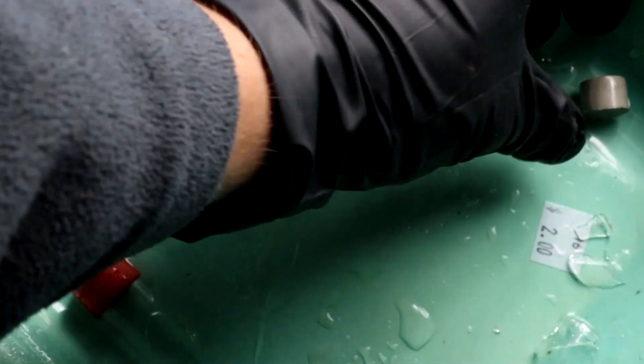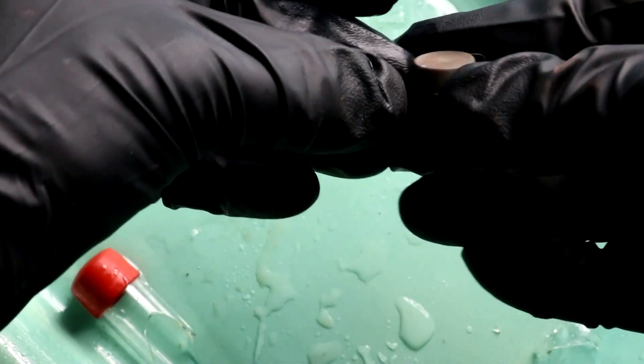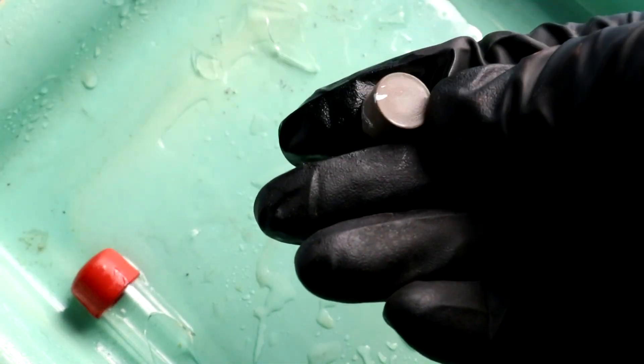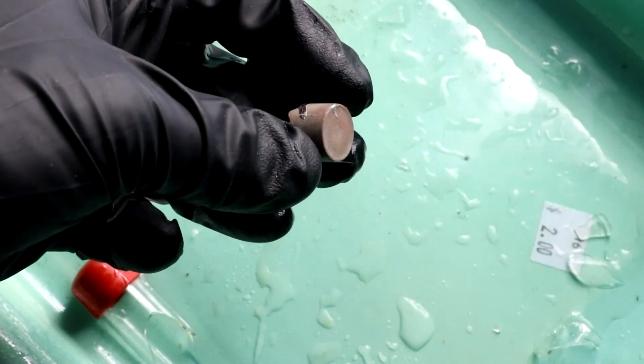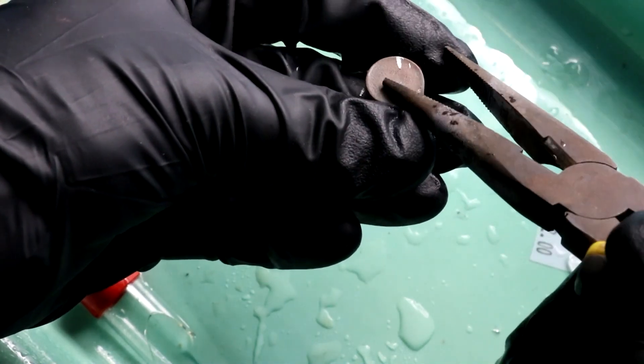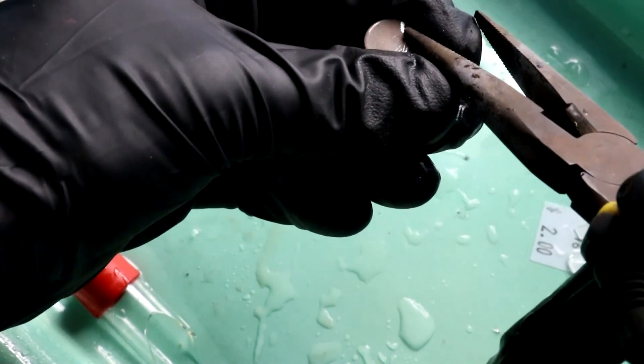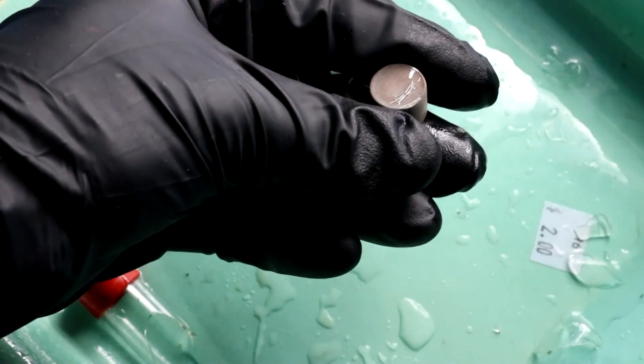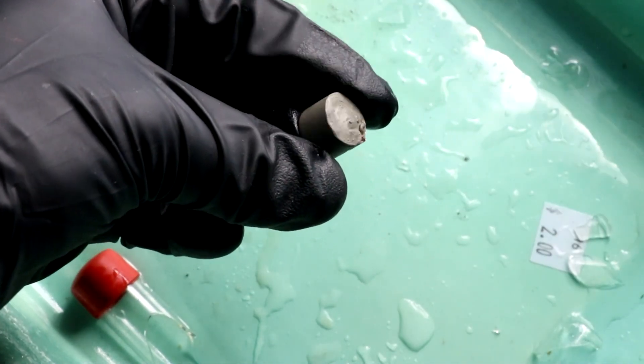There it is. Solid chunk of mercury copper amalgam. It's a little bit oxidized. That's the copper doing the oxidizing. But if I scrape at it you can see it is still shiny. Also quite hard. Just a little bit of copper makes it a solid at room temperature.